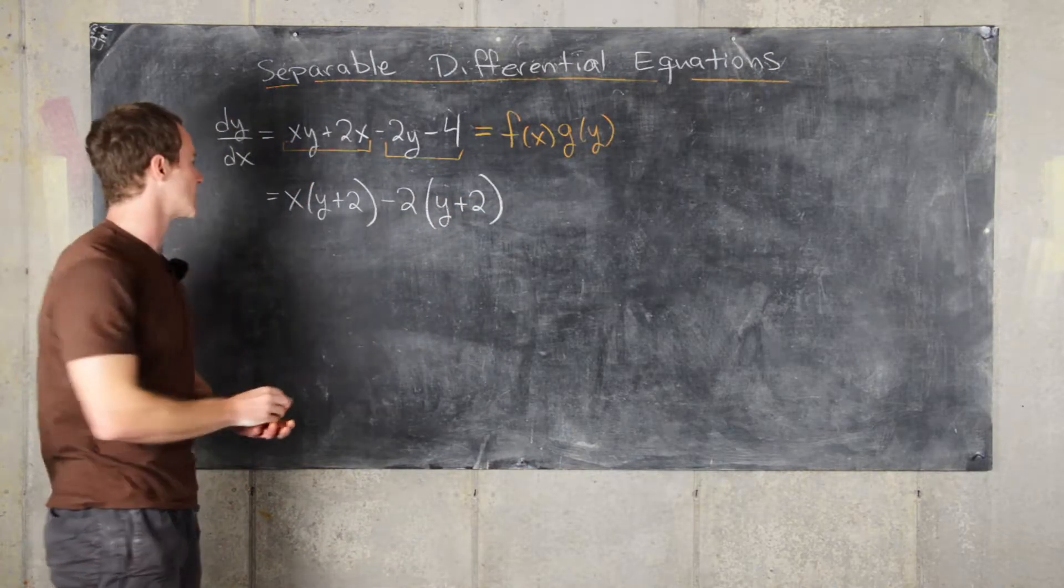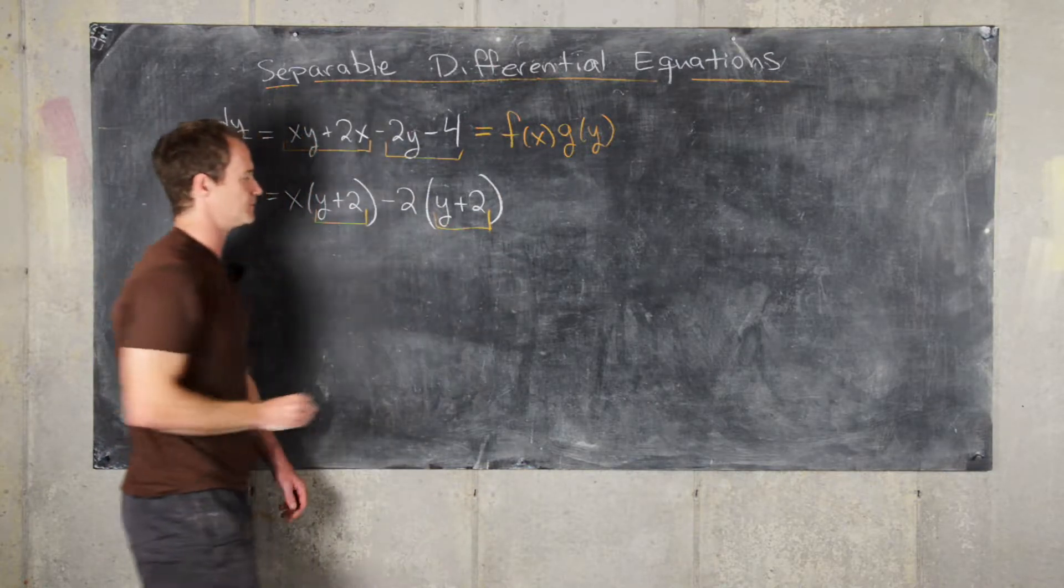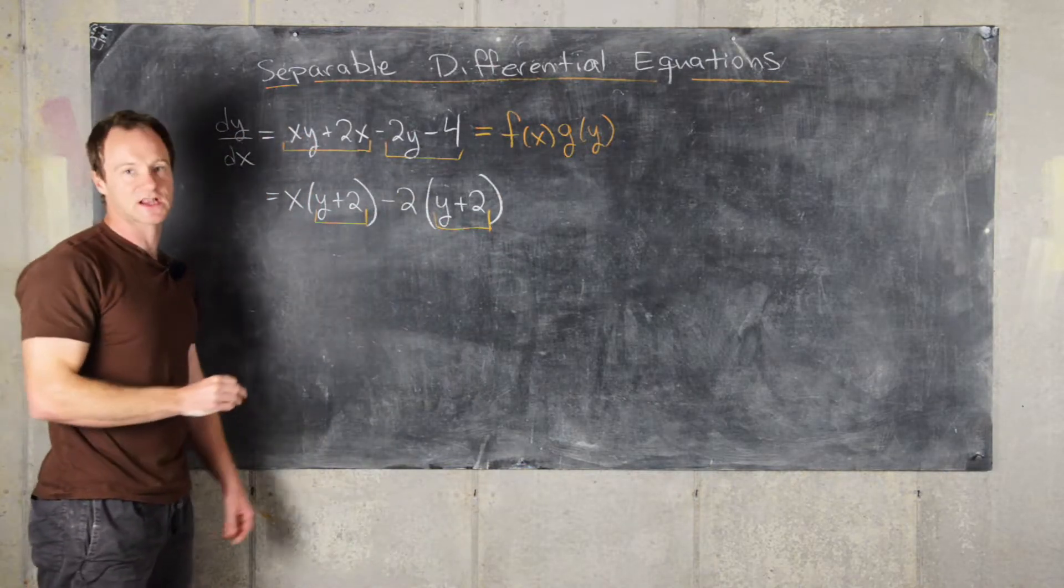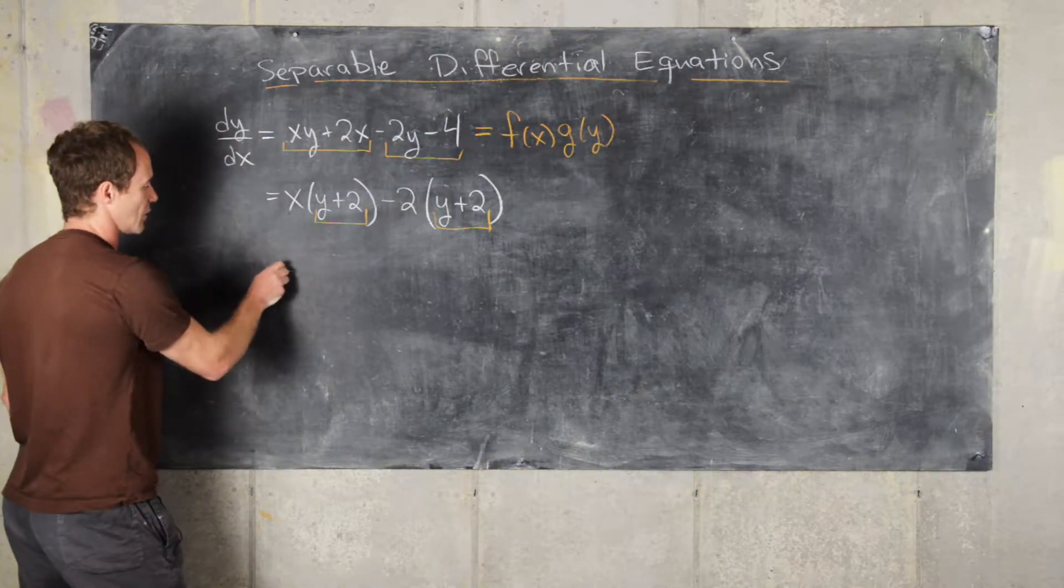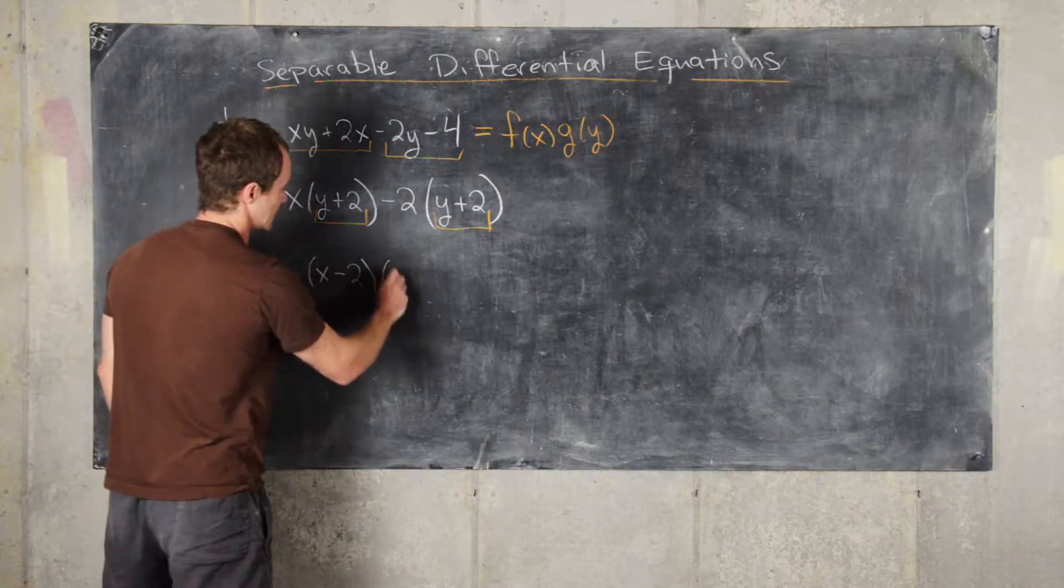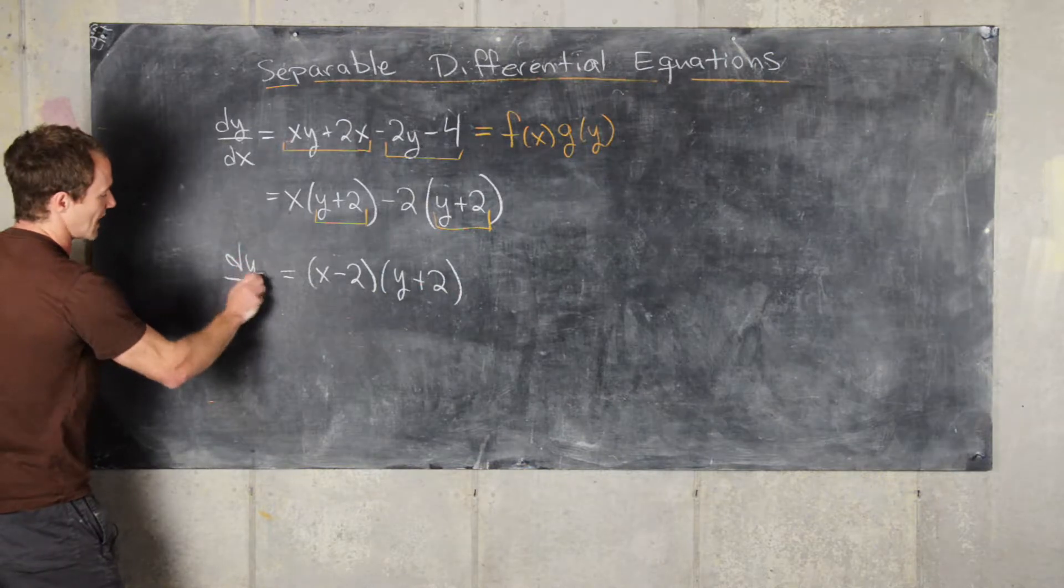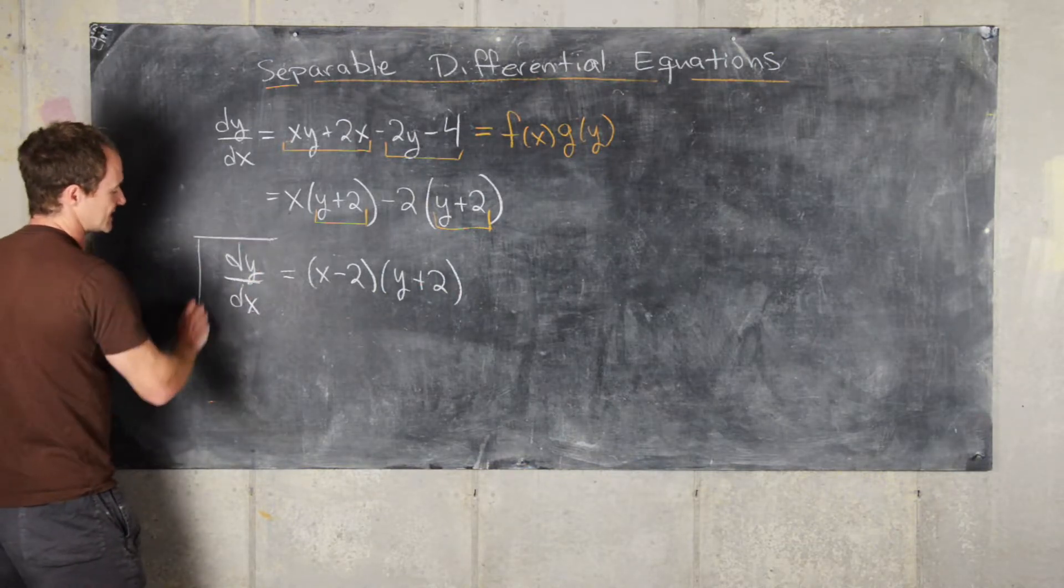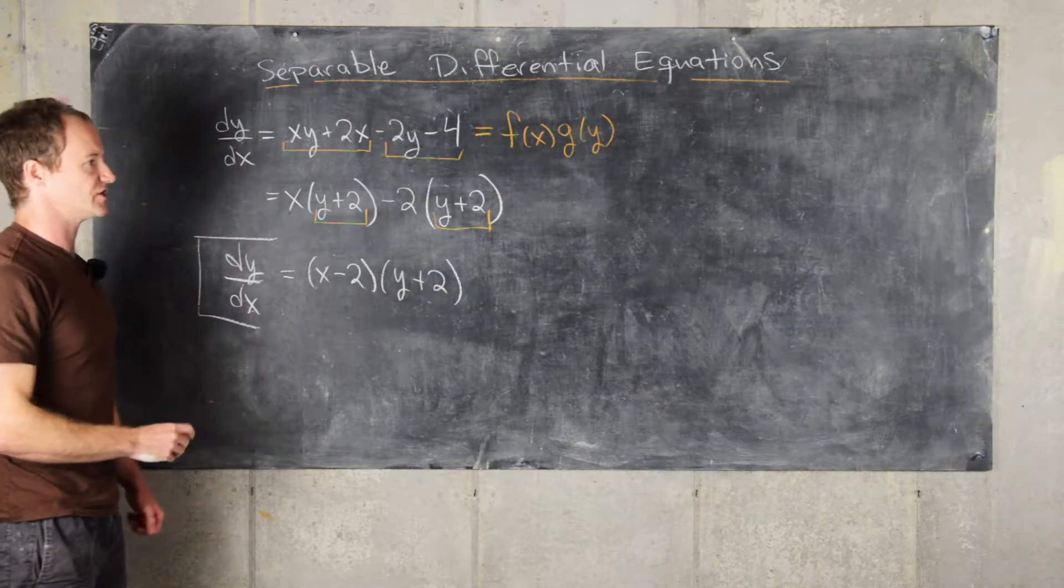That's good luck because now we can see that y plus 2 is a common factor of this x term and this minus 2 term. So we can factor that out of the whole thing. We have (x minus 2) times (y plus 2). I'll bring my dy/dx down. And now we can see that this is indeed a separable differential equation.